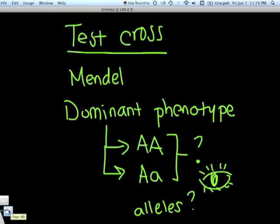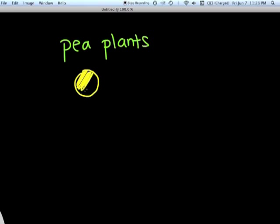So of course Gregor Mendel used pea plants to devise the concept of a test cross. In pea plants, you looked at their seeds. And in pea plants, yellow seeds were dominant.